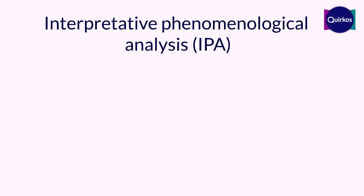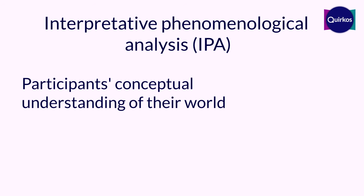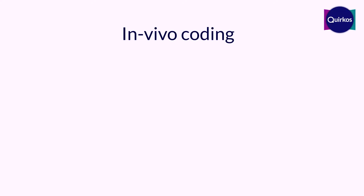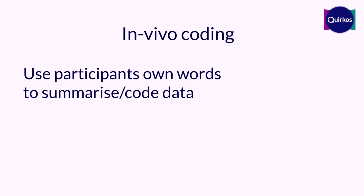There's also IPA — interpretive phenomenological analysis — which is about looking to see how participants experience and make meaning of things happening in their world, and that's often combined with a line-by-line coding approach. There's also in vivo coding, where you use the actual words and terms that participants are using to develop codes. So if somebody says 'I really love breakfast, it's my favorite meal of the day', 'love' would be the word you pull out — you're using their own words to categorize what they're saying.